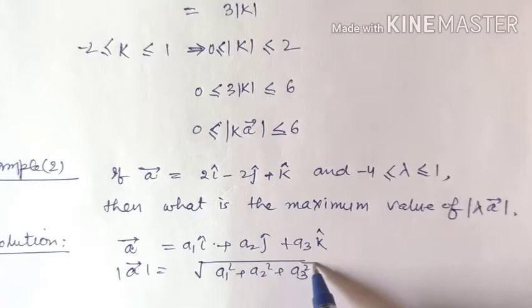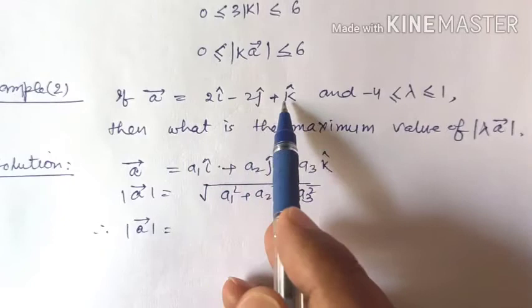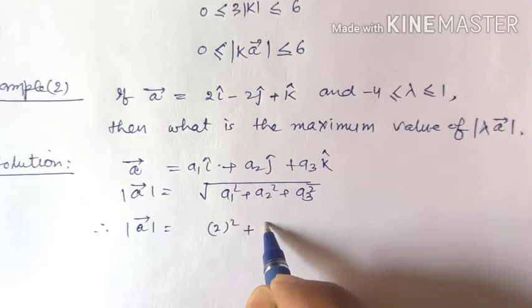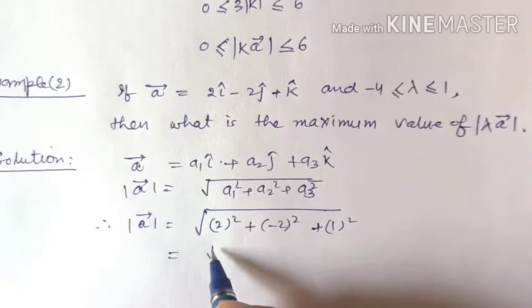Therefore, the given vector is 2i minus 2j plus k, so modulus of a equals square root of 2 squared plus minus 2 squared plus 1 squared, which equals square root of 4 plus 4 plus 1, equals square root of 9, equals 3.